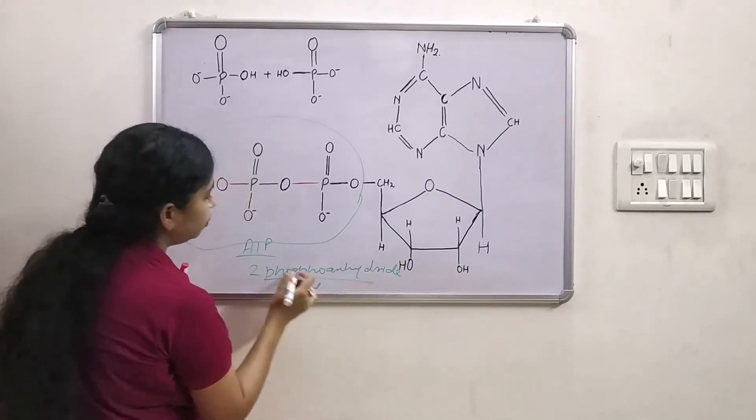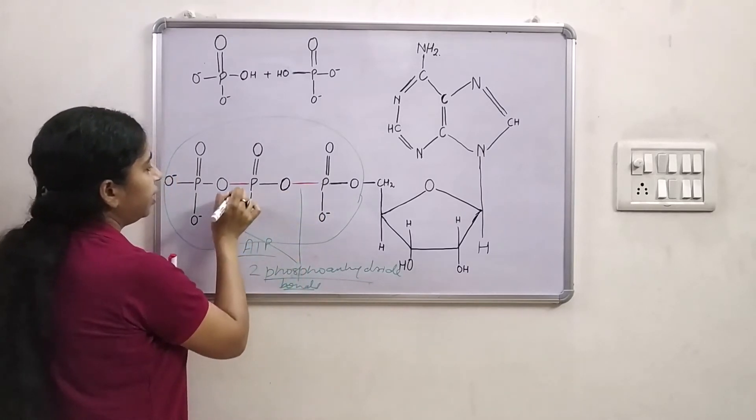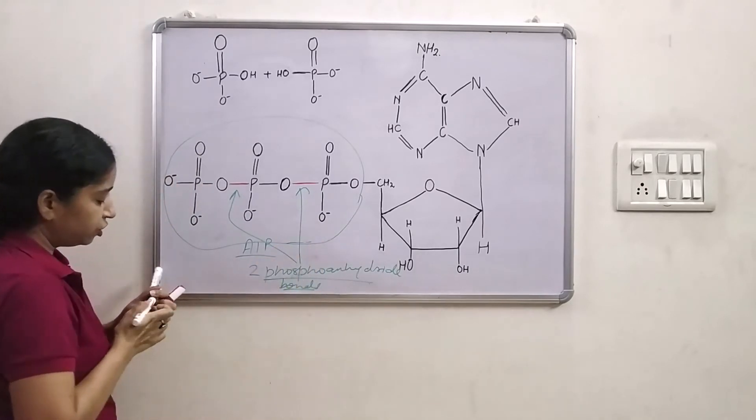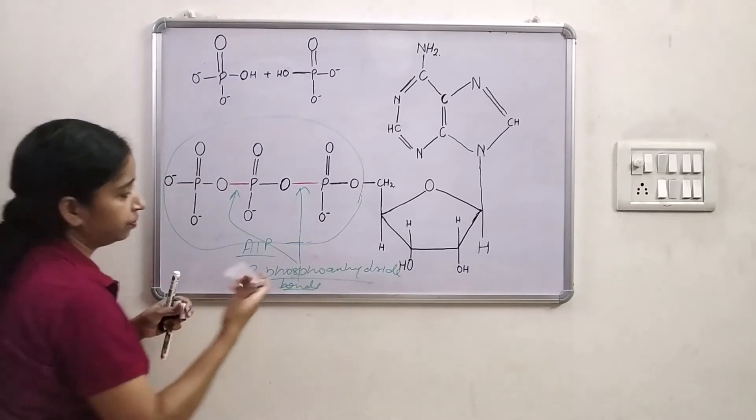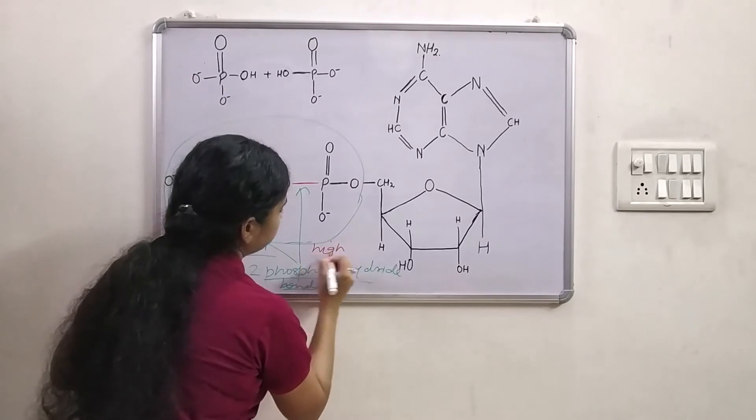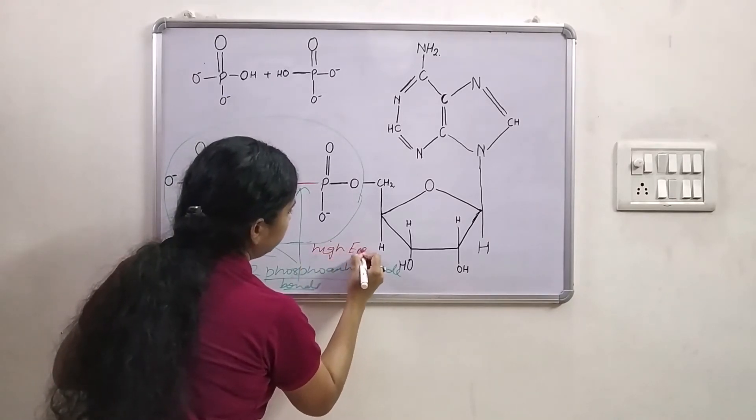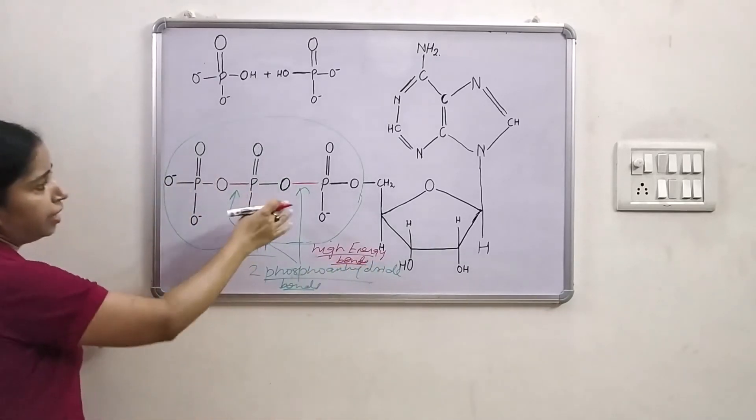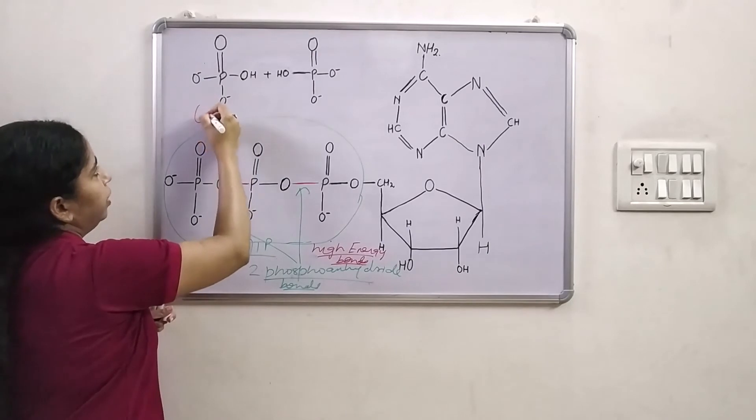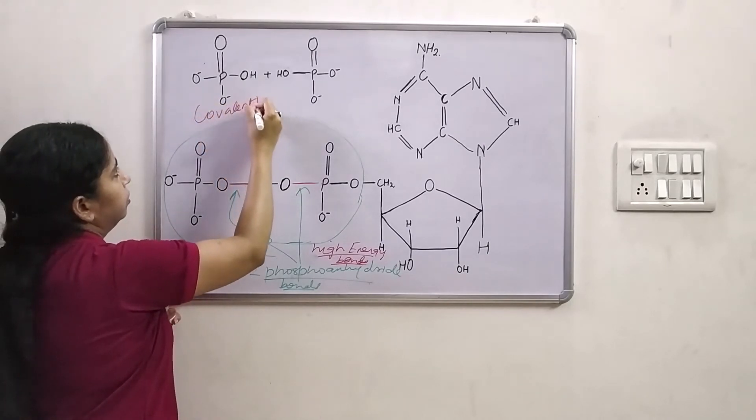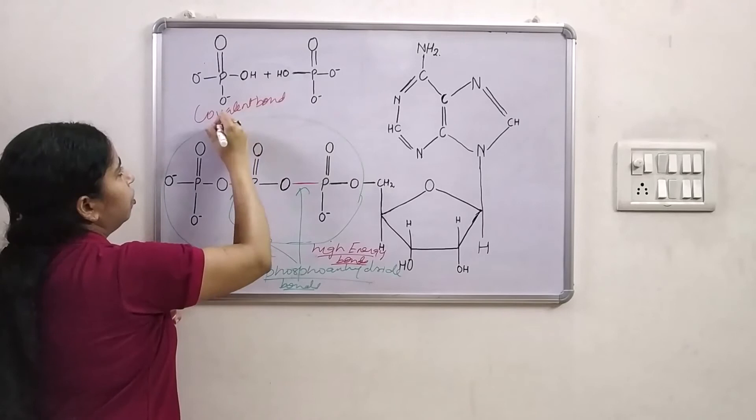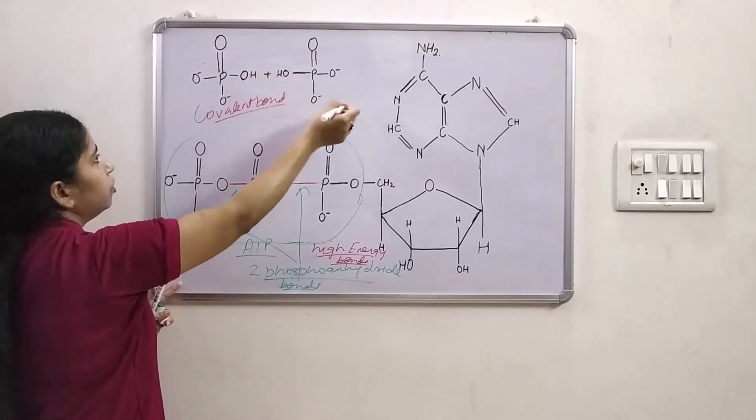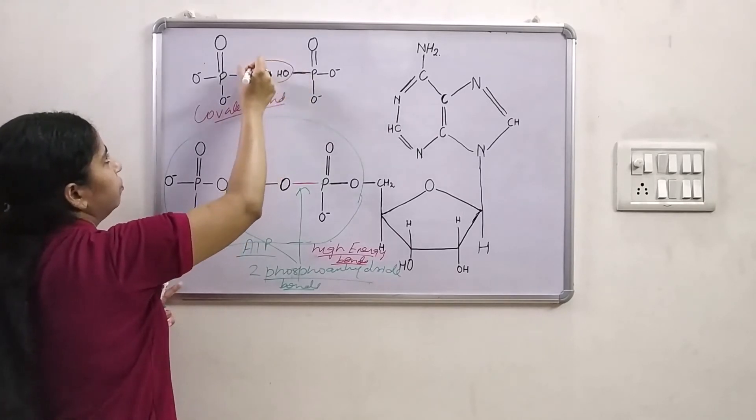Here I have shown these phosphoanhydride bonds in red. So these two phosphoanhydride bonds, these are high energy bonds. High energy bonds. Now how these bonds are formed? Phosphoanhydride bond is a covalent bond formed between two phosphate molecules. It is formed by the condensation of two phosphate molecules by the loss of water.